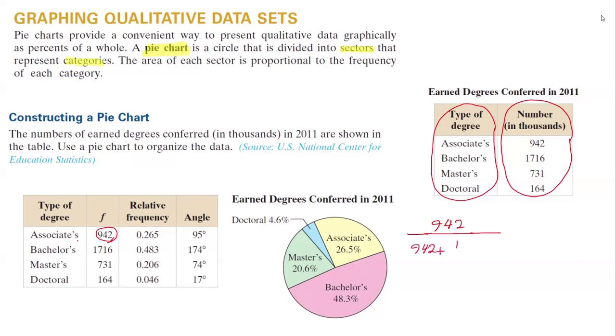The total is going to be 942 plus 1716 plus 731 plus 164. If you do the division, it is going to be 26.5 percent. So that's how you find the relative frequency for the first category.